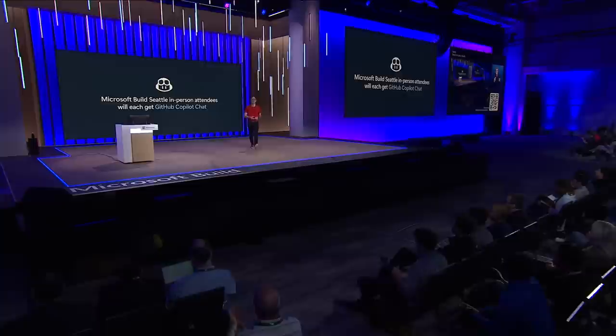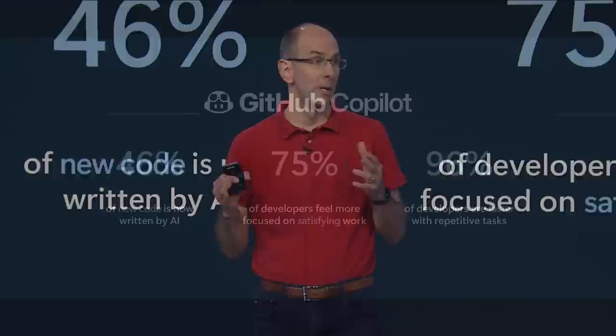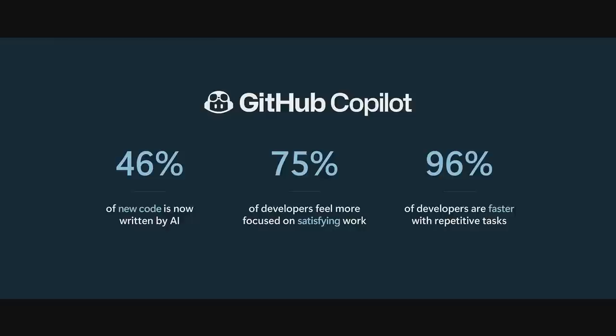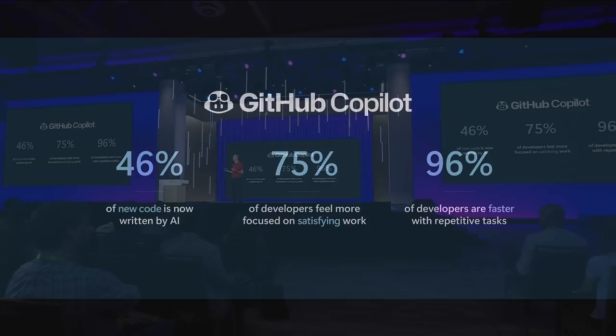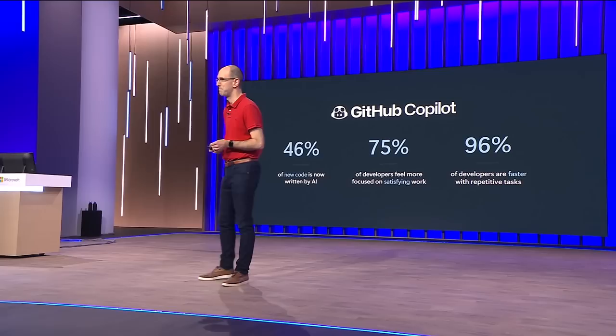We're really excited to see what everyone here is able to do with GitHub Copilot. As you just saw, Copilot dramatically accelerates developer productivity. In fact, 46% of all lines of code written by developers using GitHub Copilot are now fully AI-generated. 75% of developers using Copilot feel they can now focus on more satisfying work. 96% report being able to complete repetitive tasks a lot faster. We now have over a million developers using GitHub Copilot around the world.